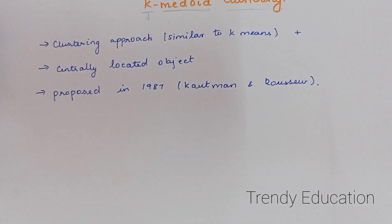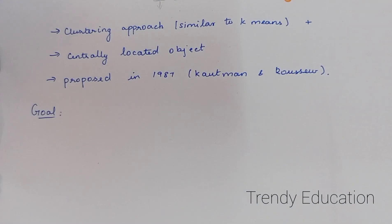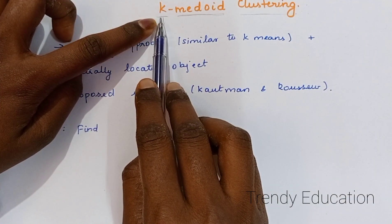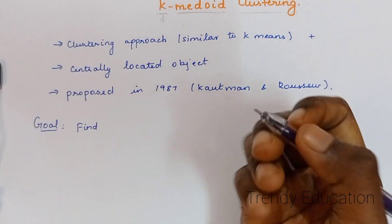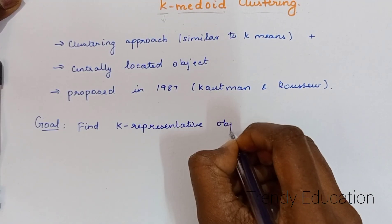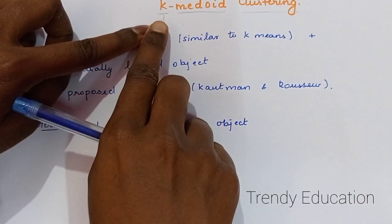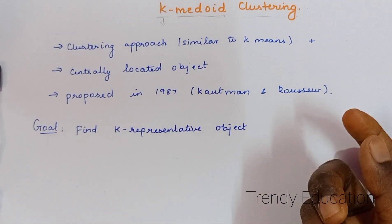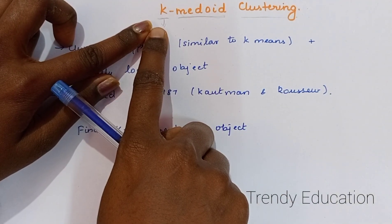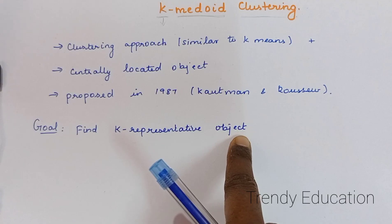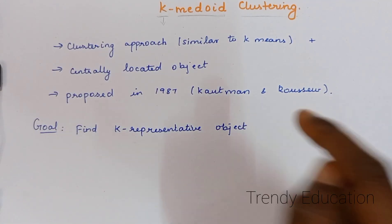So what is the goal of K-Medoid clustering? In K-Medoid clustering, we are going to find K representative objects. When I give K equal to 2, I find 2 representative objects, which are called medoids. When K equals 3, there are three medoids, meaning three clusters — three objects that act as the three medoids. The goal is to find K representative objects to minimize the average dissimilarity of objects to their closest selected object.